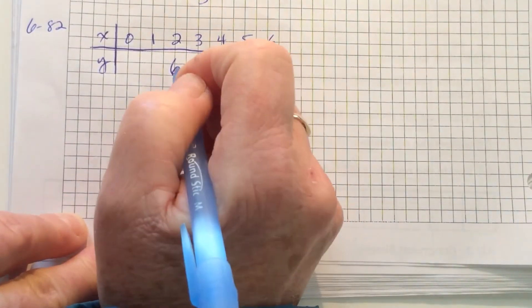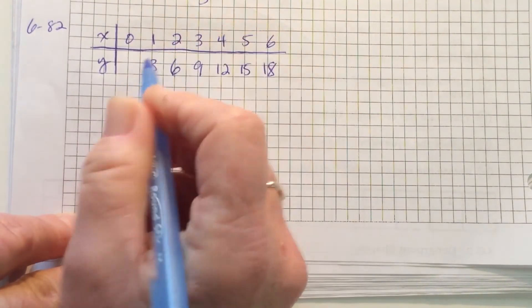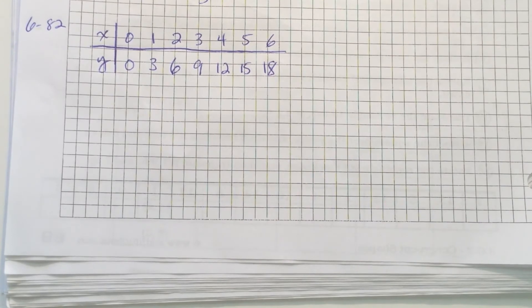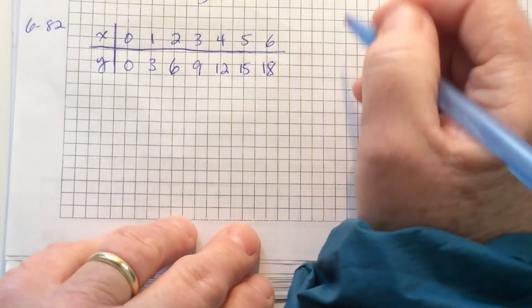Then I'm going to work backwards. 6 minus 3, and then 3 minus 3. Figure 0 has no tiles.